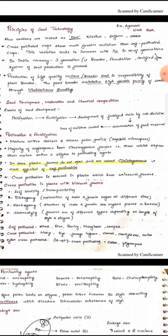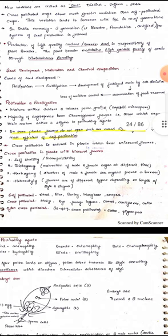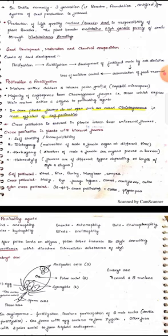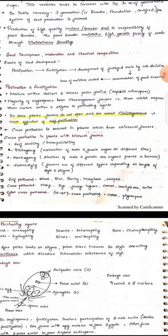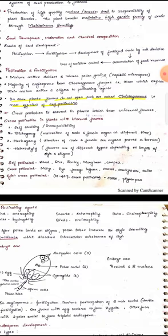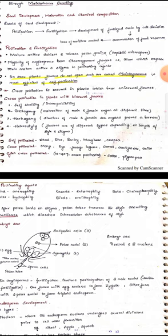Let us come to pollination and fertilization. Mature anther dehiscence and release pollen grains, and there is the source of male part in any flower. This is haploid microspore. Next, majority of angiosperms bear chasmogamous flowers, that is which expose their mature anther and stigma to pollinating agents. Chasmogamous means always closed kind of condition in flowers. Slowly they'll open and whenever they are hermaphrodite they'll go for self-fertilization. In some plants flowers do not open at all, that is cleistogamous, most efficient for self-pollination. Here you should understand the difference between chasmogamous and cleistogamous flowers.